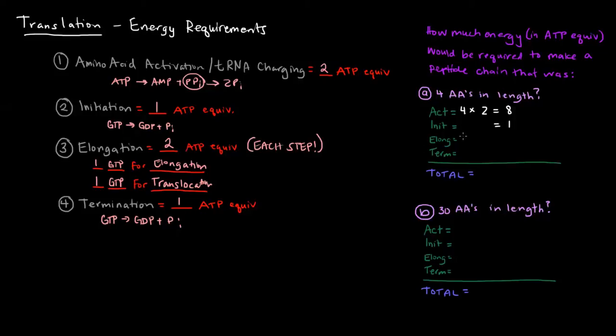Now, what about elongation? Well, once we've initiated it, we have one amino acid sitting in the peptide chain, and we're going to add three to it. So that means if we're going to add three of them, then we're going to have three elongation steps. So we're going to have three elongation steps times the energy requirement for each step, which is two equivalents, so that will cost us six ATP.